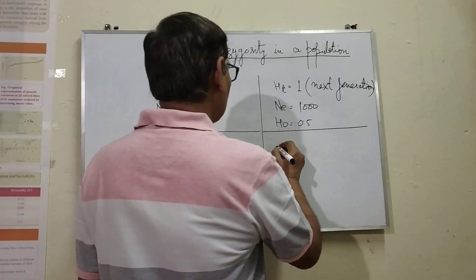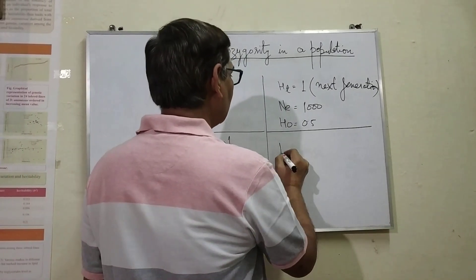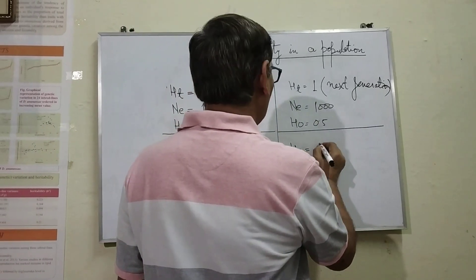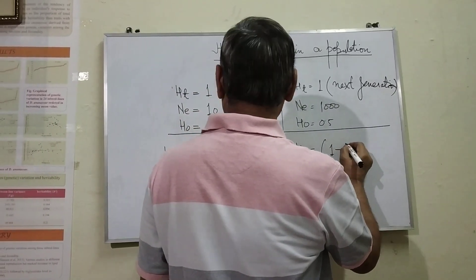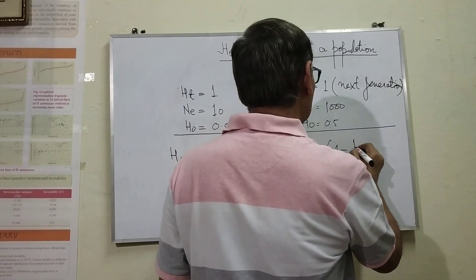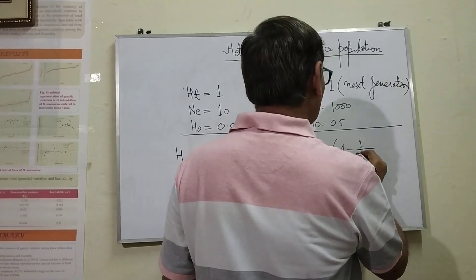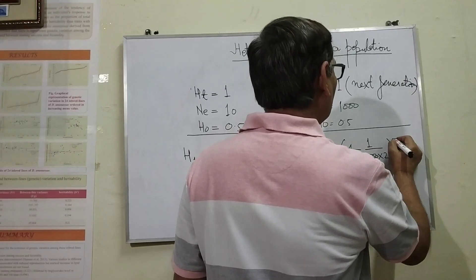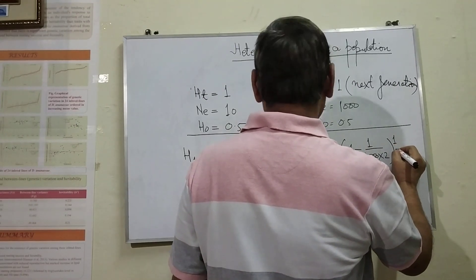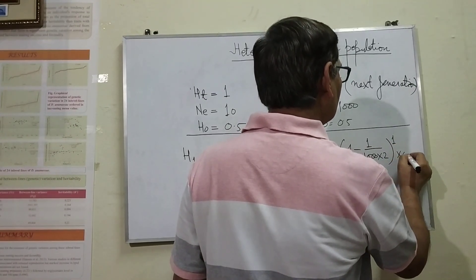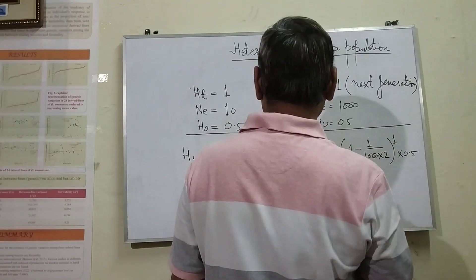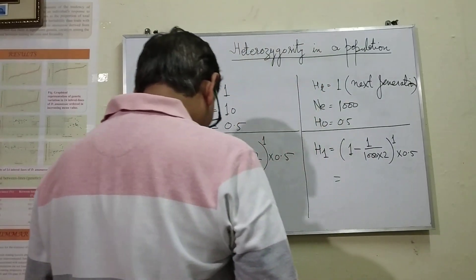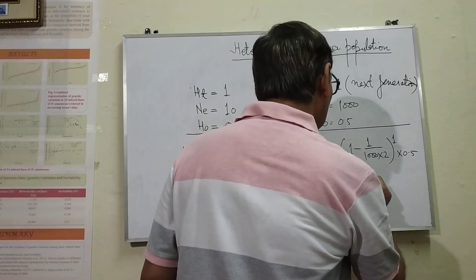Now if we consider the same situation — heterozygotes in the first generation when the number of individuals is quite large, that is 1000 individuals — and we want to test it in the next generation with an initial frequency of 0.5, then when you solve this, it will come 0.499.